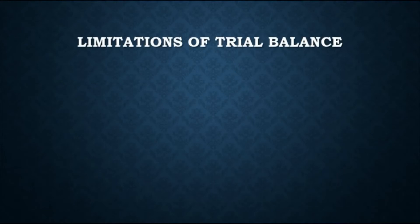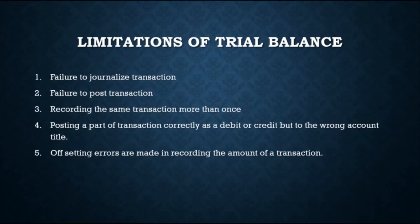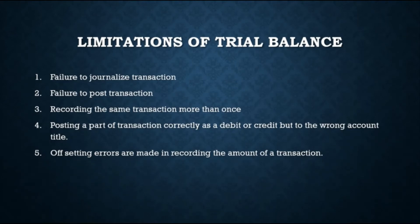The trial balance proves the mathematical equality of debits and credits after posting. However, even if the trial balance is balanced, it does not provide complete proof that the accounting records are correct. There may still be errors that do not affect equality — for example, a transaction that was not journalized or posted, a transaction recorded more than once, or posting to the wrong account but with the same debit and credit side. For instance, debiting Supplies but posting to Equipment, or crediting Accounts Payable but posting to Notes Payable, or errors that offset each other.